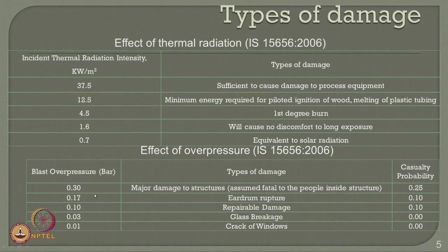Most importantly, the casualty probability if these kinds of over pressure damages are foreseen in a given system varies from practically close to 0 to as high as 25 percent.